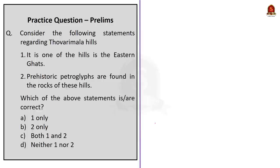In this news article discussion, we saw about petroglyphs on the Tovari hills, the procedure for declaration of a protected monument, and what is an ancient monument or archaeological site. The procedure involves a two-month notice for inviting objections to protect monuments, sites and remains of national importance, after which ASI makes its decision. We also saw about the science branch and horticulture branch of ASI.